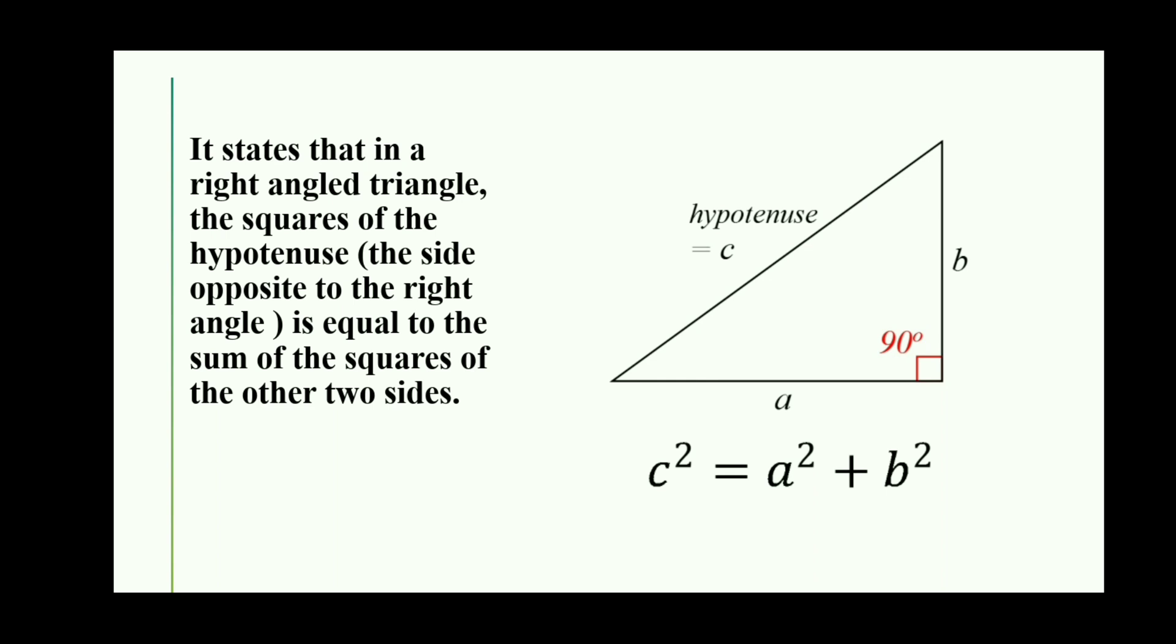In the diagram in front of you, there is a right angle triangle. The side opposite to the 90 degree angle is the hypotenuse, and the hypotenuse has a special relation to the other two sides.